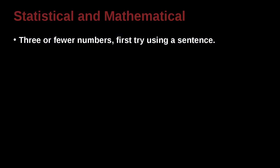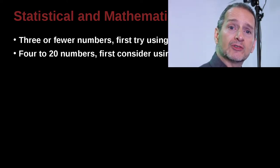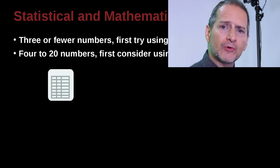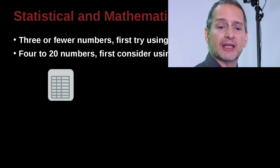If you have three or fewer numbers, that is just a few numbers, then try to put it into a sentence. Do not put them into a table. If you have more than three, that would be 4 to 20 numbers, then in that case you want to probably use a table. That could be a simple table or a little bit complicated table, which we'll talk about in the next unit, Unit 7.